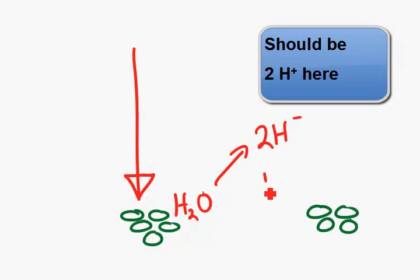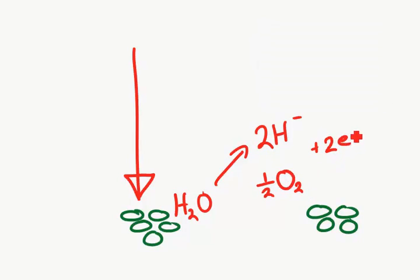We've got water and it gets broken in half. So we end up with two hydrogen ions, half of an O₂, and two electrons.